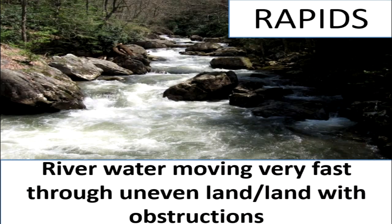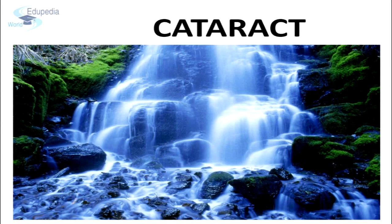The upper course of the river is also full of rapids, cataracts, and waterfalls. Rapids are formed when a river moves very fast through uneven land or land with obstructions. These occur at any part of the river course but are most numerous in the mountainous course where changes in gradient are more abrupt and frequent. Due to the unequal resistance of hard and soft rock, the outcrop of a band of hard rock may cause the river to jump and fall downstream, forming rapids. Similar falls of greater dimensions are referred to as cataracts, which interrupt smooth navigation.